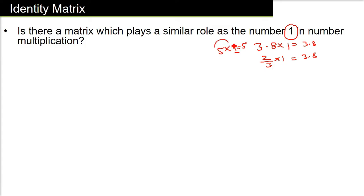That is whichever matrix you multiply by this identity matrix, that matrix will come back. That will not be changed. There will be no change. For example, I will explain you with an example.